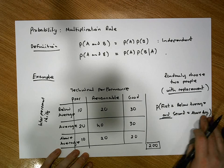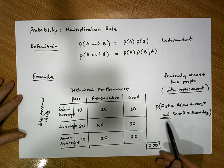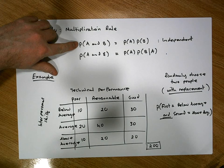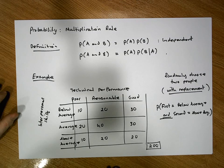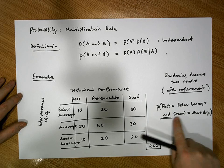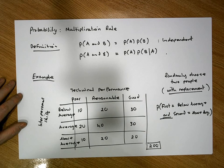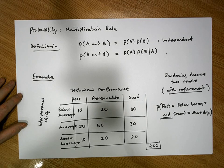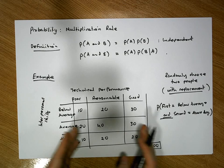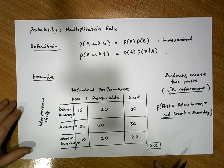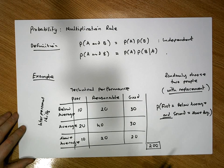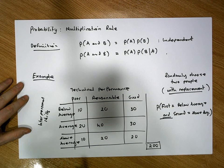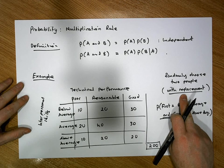This is an 'and' problem, so we're dealing with the multiplication rule — both the independent and non-independent versions. We need to figure out: after the first selection, has the sample space changed for the second selection? Since we're selecting with replacement, the first person is put back, so the second selection is still made from 200 individuals. The sample space has not changed, which tells us the two events are independent of each other.